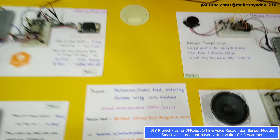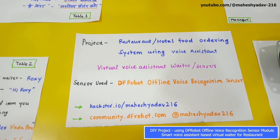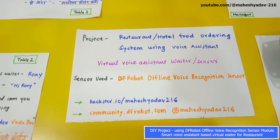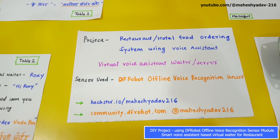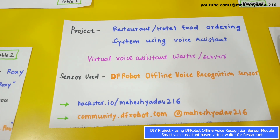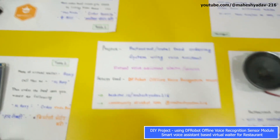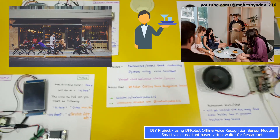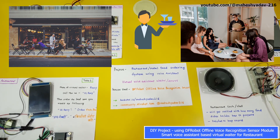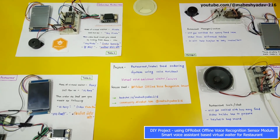Here is the project: a restaurant or hotel food ordering system using a voice assistant. It consists of a virtual voice assistant as a waiter or server. We can give voice command orders to it for different food items. We have used a DF Robots offline voice recognition sensor for this project. Typically in restaurants, persons are appointed as a server or waiter who will take orders from customers, but here we have used a virtual voice assistant instead.